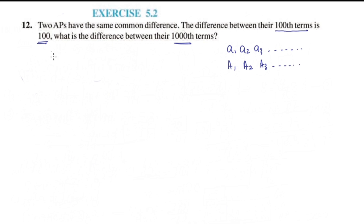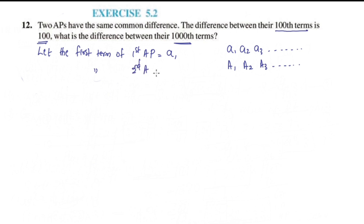Let the first term of the first AP be equal to 'a', and the first term of the second AP be equal to 'A'. The common difference for both APs is 'd'. So the second AP also has common difference d.